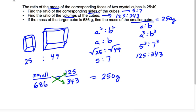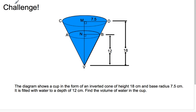Cool stuff, right? Yeah, I thought so. Now, here's a challenge for you. I love this problem. The diagram shows a cup in the form of an inverted cone of height 18 centimeters and base radius 7.5 centimeters. It is filled with water to a depth of 12 centimeters. Find the volume of water in the cup. Here's a hint. Look for similar triangles.